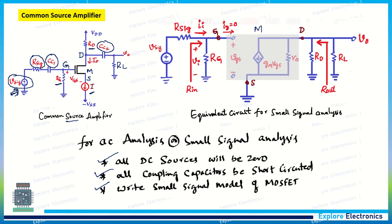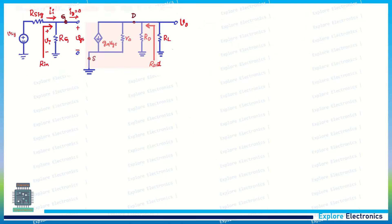We measure R_in from the gate side and R_out from the drain side. Now let us derive expressions for R_in, R_out, V0, and gain AV. Looking at the input side, since the gate of the MOSFET draws no current, the gate current IG is always zero, so at the input IG = 0.